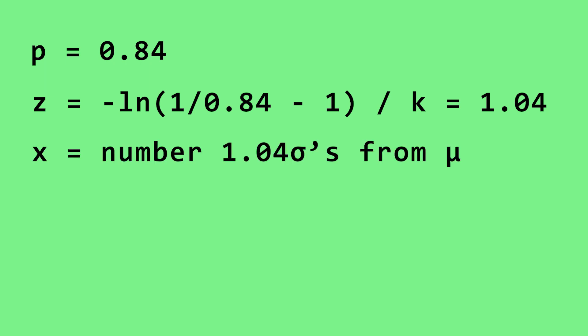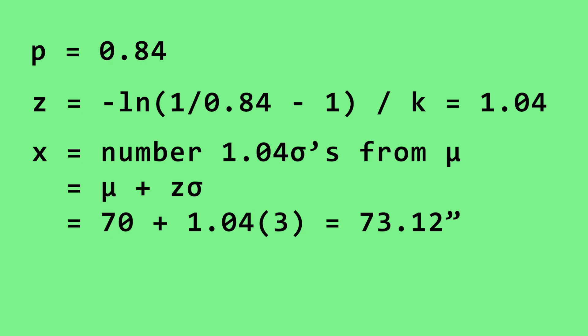Say we get the random number 0.84. When we run this through the quantile function, we get 1.04, which means we want to return a number that is 1.04 standard deviations away from the mean. Going back to height, this would be the mean, 70, plus the z-score of 1.04 times the standard deviation of 3, to get a height of 73.12 inches.